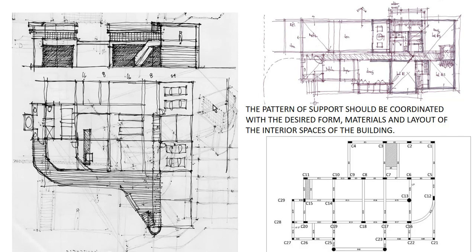When you start to become more familiar with what materials can be used and how long their spans are — like in the past assignment where you looked up different materials and how far they can span — you start to decide: what type of material do I want to use? Do I want curves in my layout? Do I want a perfectly symmetrical grid, or something like this one where the grid sizes are changing and open to open plans? The pattern of support should be coordinated with the desired form, materials, and layout of the interior space of the building as you start to design.